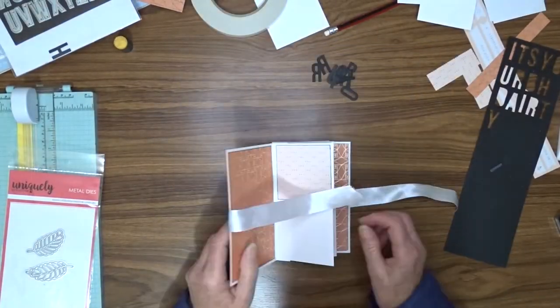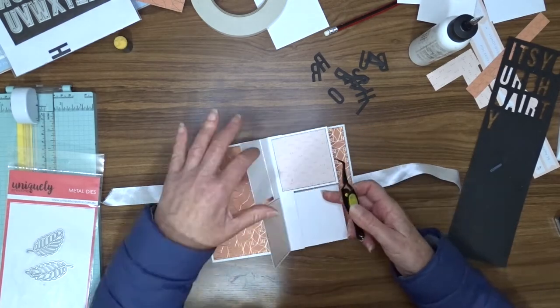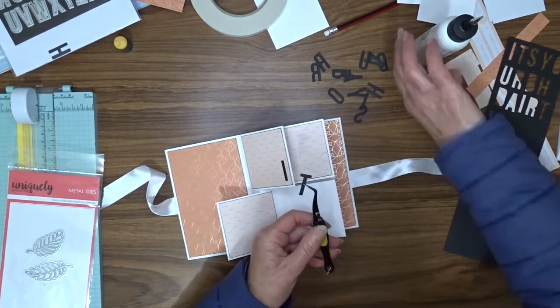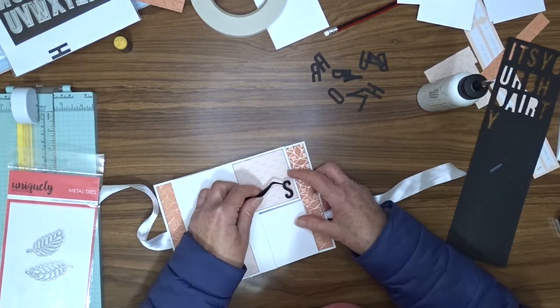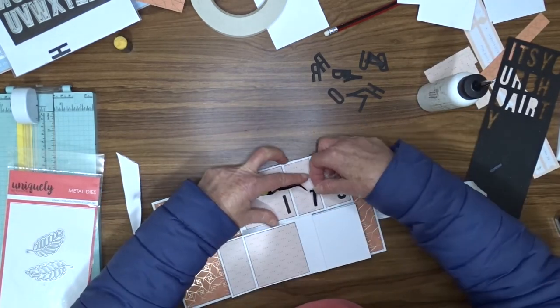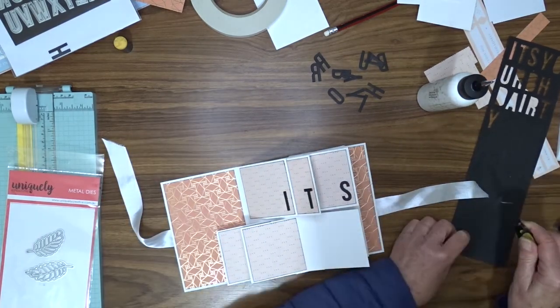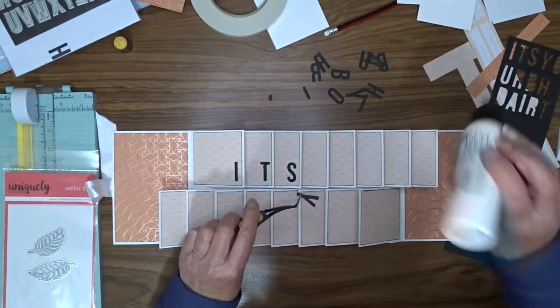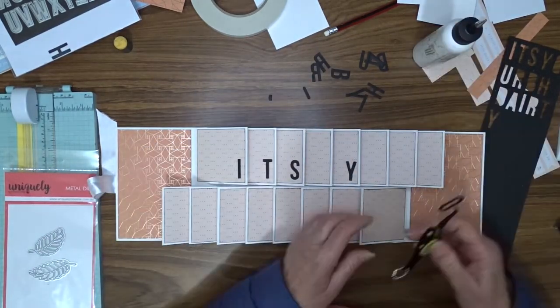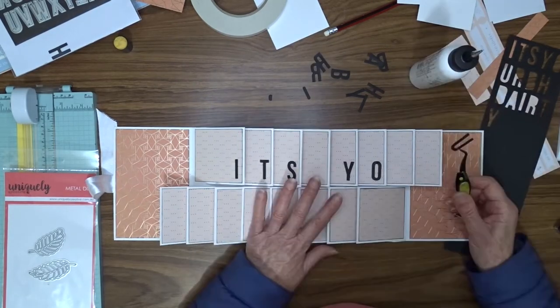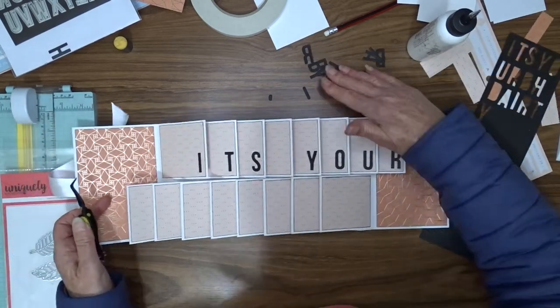To create the greeting inside of the card, I'm going to use my KaiserCraft DD700 Alphabet Uppercase and I'm going to cut the letters from black cardstock. I've chosen to put in there, it's your birthday, but you can put any greeting in there, you could put happy birthday, you could put whatever you like really, but anyway I've chosen to go for it's your birthday.